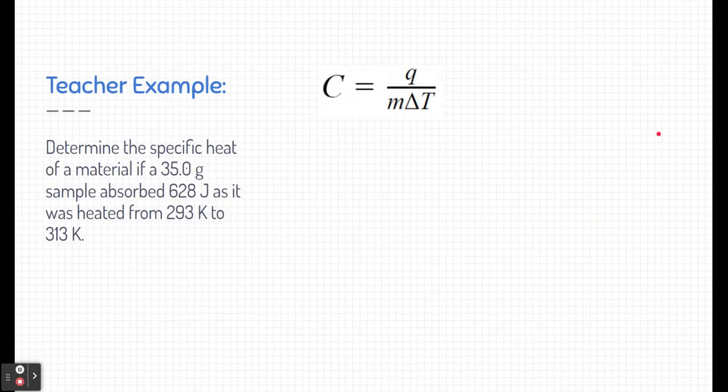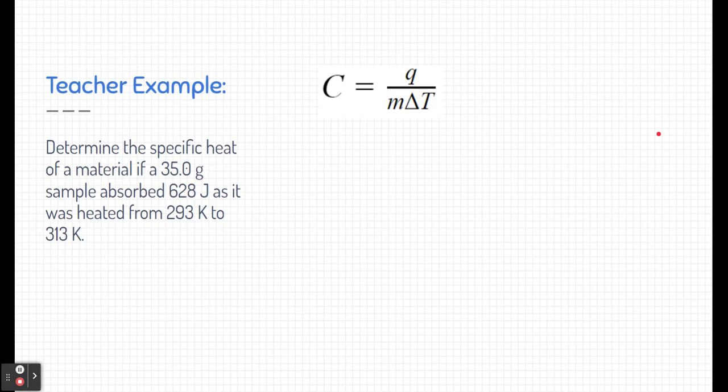In fact, let's go ahead and go through an example right now. Here it says to determine the specific heat of a material if 35 grams of a sample absorbed 628 joules as it was heated from 293 Kelvin to 313 Kelvin. Well, quite easily, we just need to figure out what each of the pieces of this equation are. Let's start with what the question is. We're trying to find the specific heat, so we're looking for c.